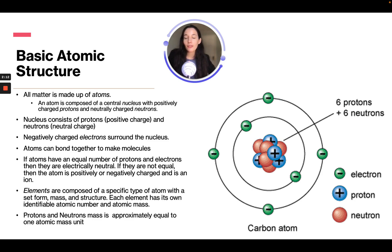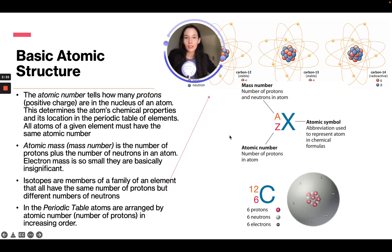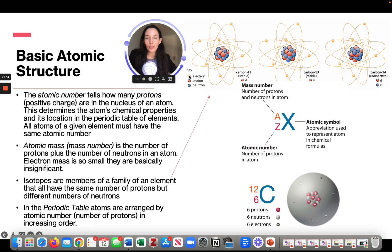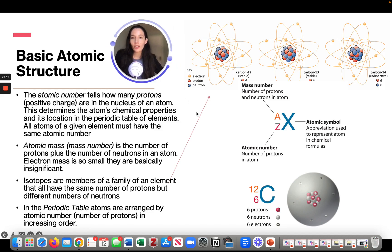Elements are composed of a specific type of atom with a set form, mass, and structure. Each element has its own identifiable atomic number and atomic mass. Protons and neutron mass is approximately equal to one atomic mass unit. The atomic number tells how many protons and electrons are in the nucleus of an atom. This determines the atom's chemical properties and is located in the periodic table of elements.